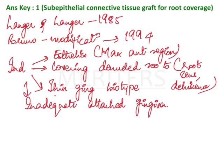The main indications of this procedure are where aesthetics are of primary concern, that is the maxillary anterior region. However, a drawback with these procedures is that the graft does not take up the same color as the adjacent gingiva. That is the reason why we prefer using a split thickness flap so that at least there will be some color matching.